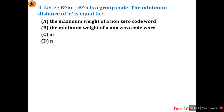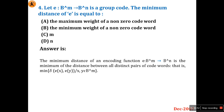Question 4: Let e: B^m → B^n be a group code. The minimum distance of e is equal to — the maximum weight of a non-zero codeword, the minimum weight of the non-zero codeword, m, or n? The standard theorem states the minimum distance is the minimum of delta(e(x), e(y)) over all distinct pairs. So option B — minimum weight of a non-zero codeword — is the right answer.